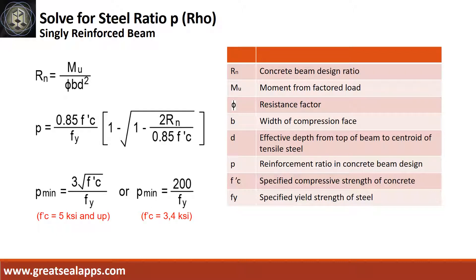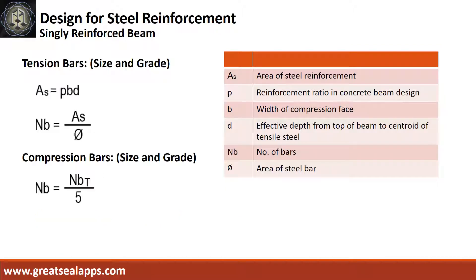For a singly reinforced beam, get the concrete beam design ratio, rn, then solve the reinforcement ratio ρ, and check it against ρ minimum from the ACI requirement. After solving for ρ, we can get the area of steel and its equivalent number of bars for tension bars and compression bars.